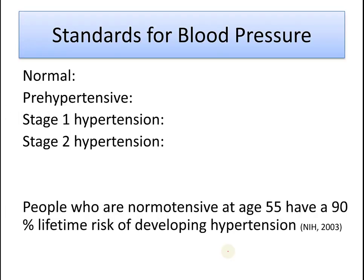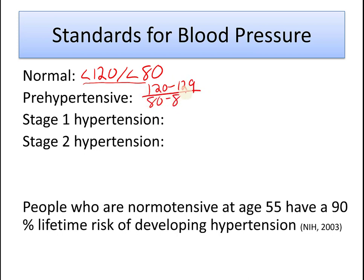What are the normal standards for blood pressure? According to the National Institute of Health, normal blood pressure is less than 120 over less than 80. Health professionals want you to be as low as possible. If your blood pressure is in the range of 120–129 systolic and 80–89 diastolic, you are considered prehypertensive — on your way to high blood pressure. The recommendation is to eat fewer saturated fats and exercise.